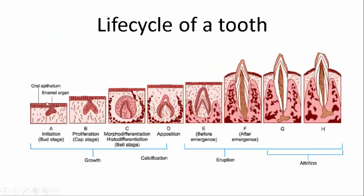Now let's see the life cycle of a tooth. The initial stage shows the oral epithelium and the proliferation of cells forming the enamel organ. The stages are: first, the bud stage; second, the cap stage, which looks like a cap; third, the bell stage; then apposition, which is tooth formation before emergence into the oral cavity; followed by emergence into the oral cavity; and finally, attrition in the later stages.